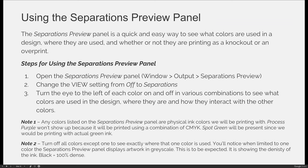Two things to note: any colors listed on the separations preview panel are physical ink colors that will be printed with. Process purple won't show up because it will be printed using a combination of cyan, magenta, yellow, and black. But a spot green color should be listed because you will be printing with actual green ink. Also, if you turn off all colors except one to see exactly where that color is used, the preview panel displays artwork in grayscale — that is to be expected, as it's showing you the density of the ink being applied.